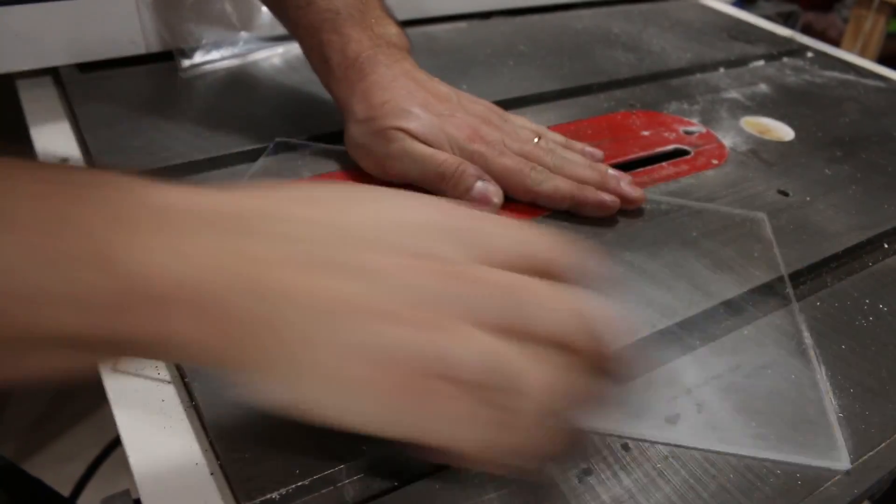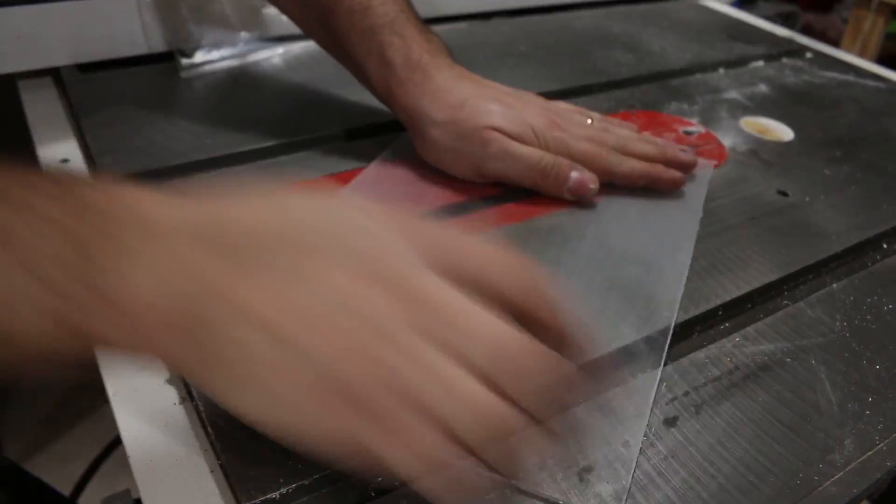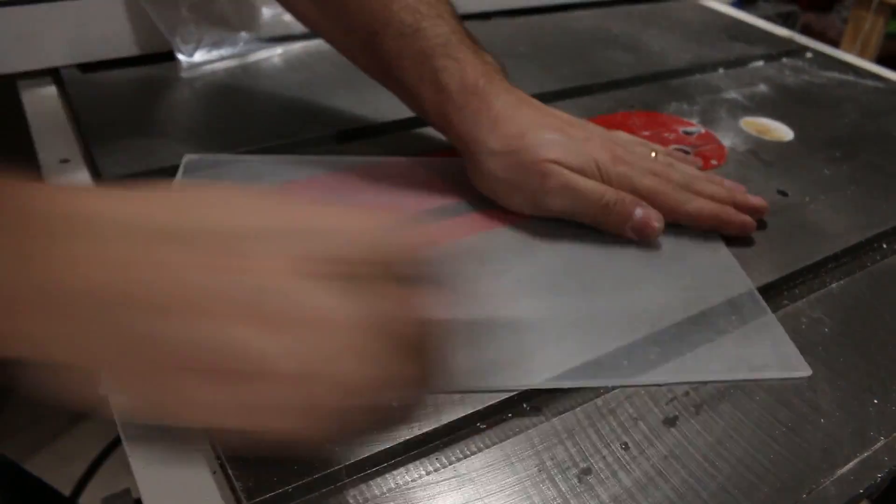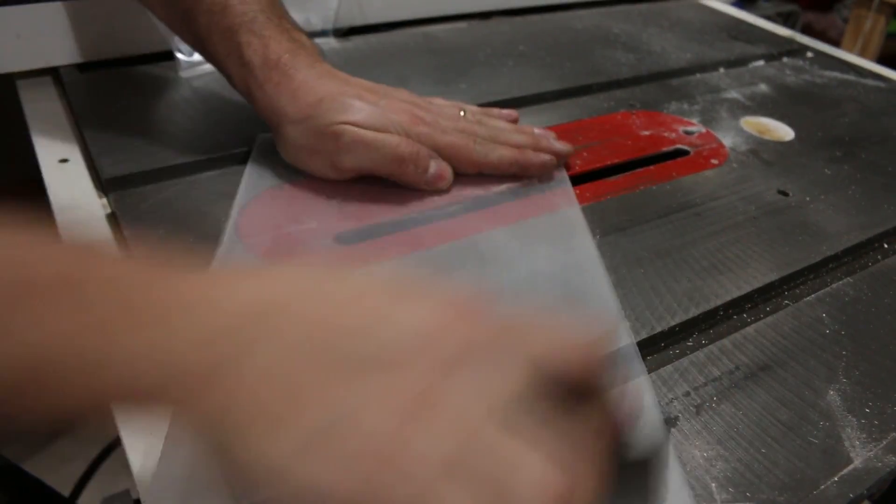Then I sanded the surface of the acrylic to create the light diffuser. We want the light to spread instead of showing up as many LEDs.